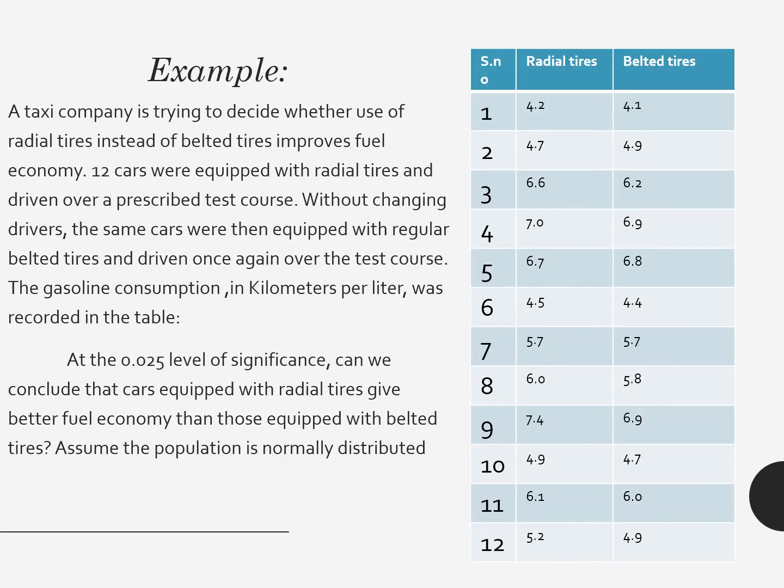We are supposed to do an example for your ease. A taxi company is trying to decide whether use of radial tires instead of belted tires improves fuel economy. Twelve cars were equipped with radial tires and driven over a prescribed test course without changing drivers. The same cars were then equipped with regular belted tires and driven once again over the test course. The gasoline consumption in kilometers per liter was recorded in the table on the right side of your screen. At the 0.025 significance level, can we conclude that cars equipped with radial tires give better fuel economy than those equipped with belted tires? Assume the population is normally distributed.